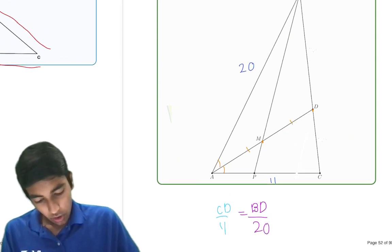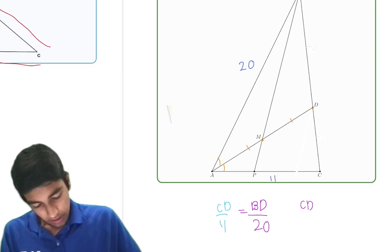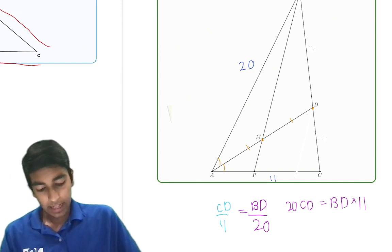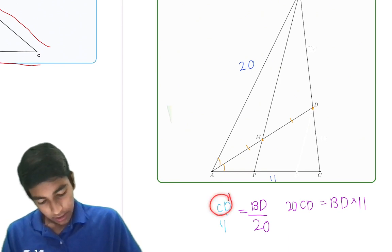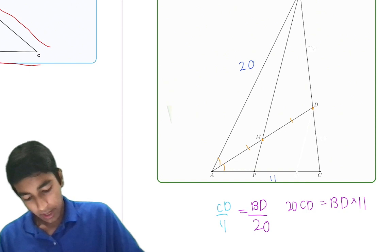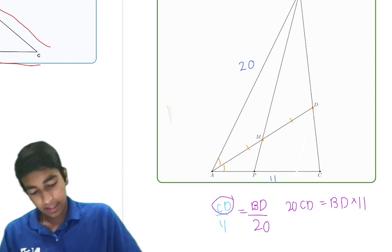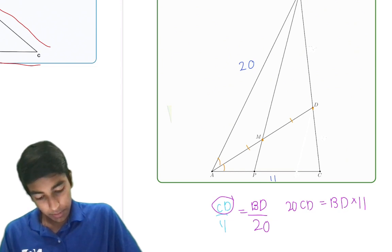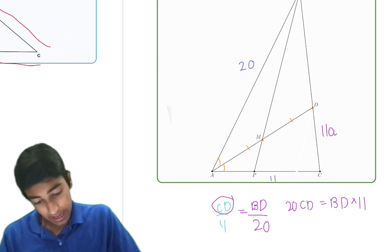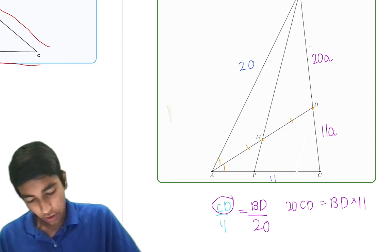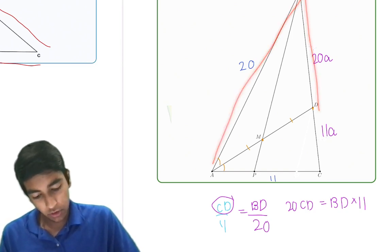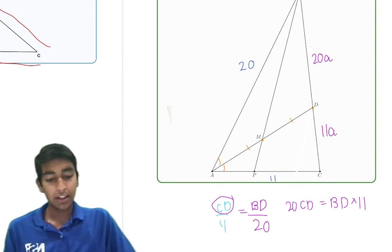Which means that 20 times CD equals BD times 11. So essentially what that means is that the ratio of CD to BD is 11 to 20. So let's say CD is 11A, then BD will be 20A. Because the ratio of 20 to 20A is the same as the ratio of 11 to 11A. That's why we just let this be 20A and 11A.